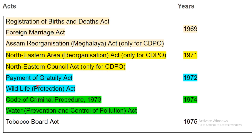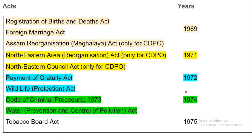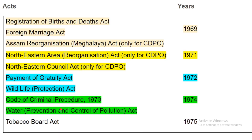Payment of Gratuity Act and Wildlife Protection Act — these two acts passed in 1972. Code of Criminal Procedure 1973 was passed in 1974. Water Prevention and Control of Pollution Act also passed in 1974. Tobacco Board Act was passed in 1975.